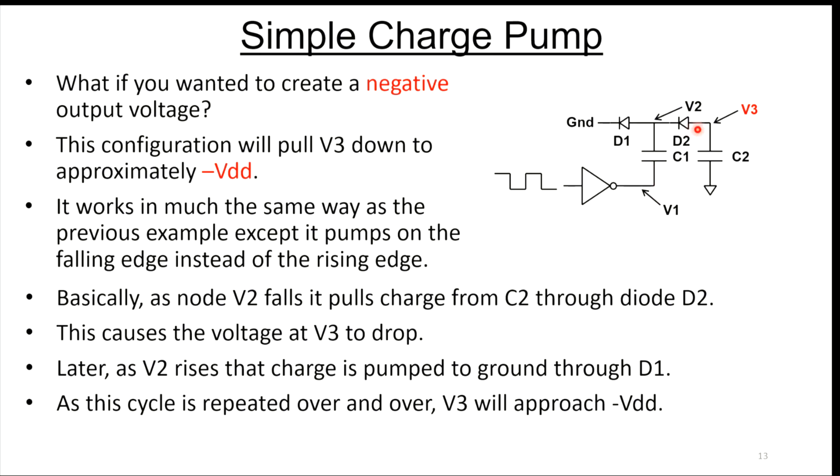This works exactly the same way as the previous pump. Only now what happens is on every cycle, we pull charge off of V3 onto C1, and then that charge gets pumped to ground. Eventually the voltage across capacitor C2 goes negative, goes below ground, and it will go all the way down to minus VDD if you clock this thing long enough. Charge pumps can be used for generating positive voltages and negative voltages.